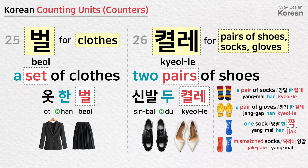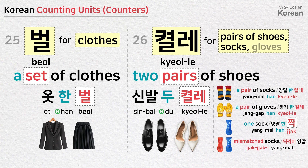벌 is a counting unit for clothes: a set of clothes — 옷 한 벌. 켤레 is a counting unit for pairs of shoes, socks, and gloves: two pairs of shoes — 신발 두 켤레; a pair of socks — 양말 한 켤레; a pair of gloves — 장갑 한 켤레. One sock is 양말 한 짝, and mismatched socks are 짝짝이 양말.